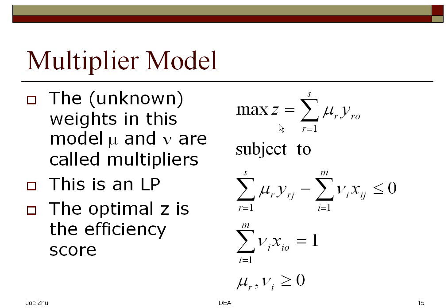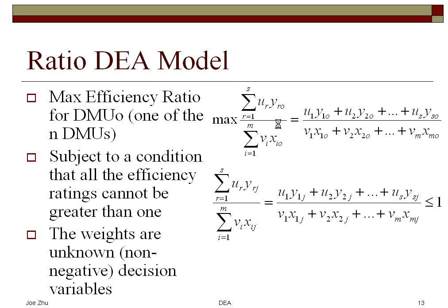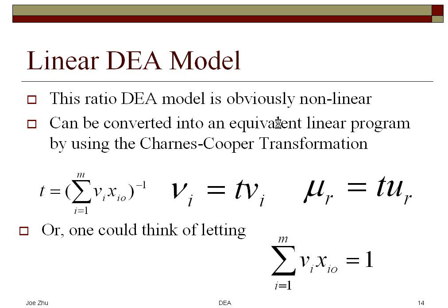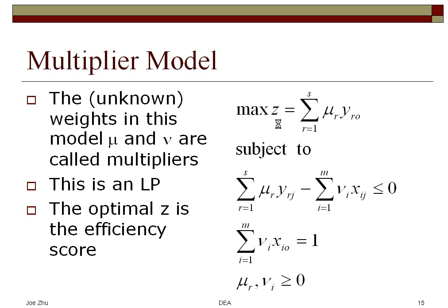Again, in this model, the x's and the y's, they are all known, because these are the inputs and outputs, they're given to you. The decision variables are those weights. And those weights are usually called multipliers. The weights in this model, the ratio model, are called weights. But because of the transformation involved here, the weights in this model are called multipliers.